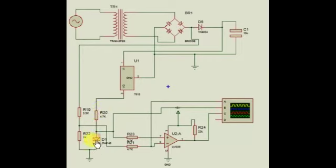This comparator compares this 0.7 volt with the pulsating DC which comes from here. After comparing, we will get the zero crossing detector output. We will see the output to understand how it works.